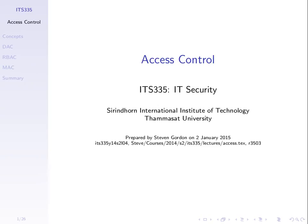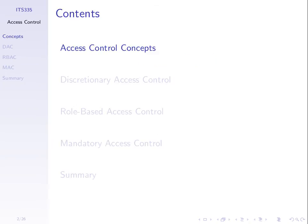We want to look at how we control which users can access which resources on a computer system. We'll look at the general concepts first and then go through three different approaches to access control: discretionary, role-based, and mandatory.